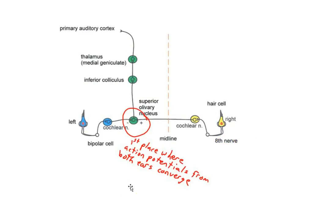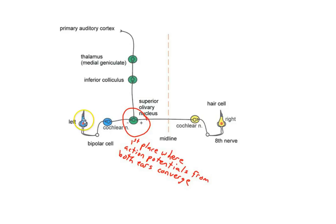Here we see a diagram of precisely where that location is. Here we have the right ear; inside the inner ear are hair cells, the sensory cells that convert vibrations into electrical signals. The eighth nerve — the auditory nerve — carries action potentials down to the cochlear nucleus, and then cochlear nuclear cells send axons to a structure called the superior olivary nucleus.